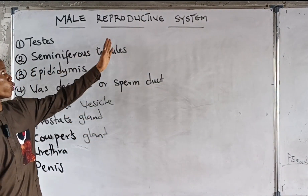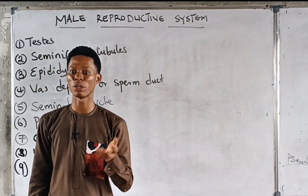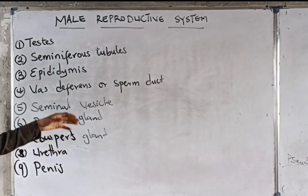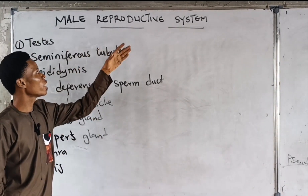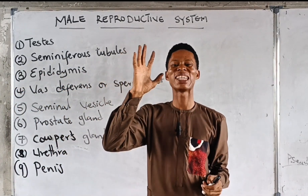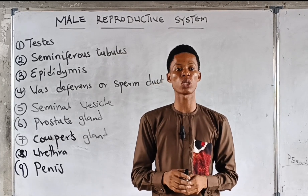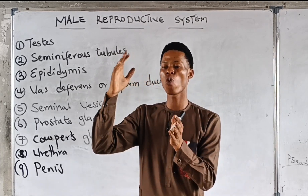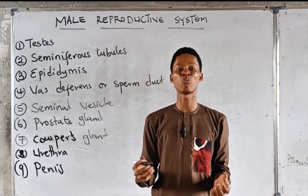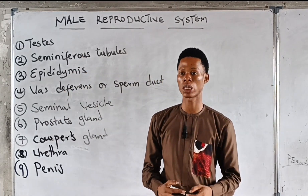We are going to be looking at the male reproductive system, after which we look at the female reproductive system. The male reproductive system has different parts, but we have nine major parts. We are going to be looking at them one after the other and their functions, because what you see in the exam is basically the functions of the different parts of the male reproductive system.